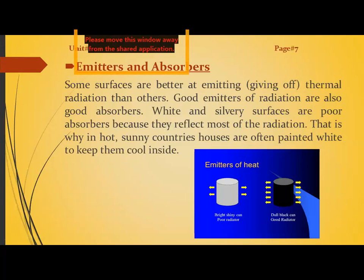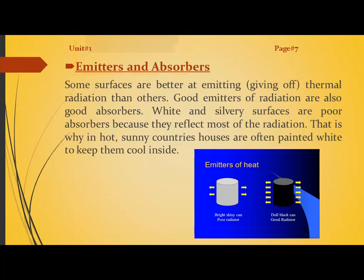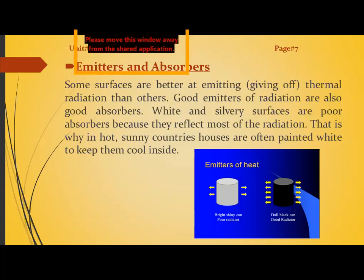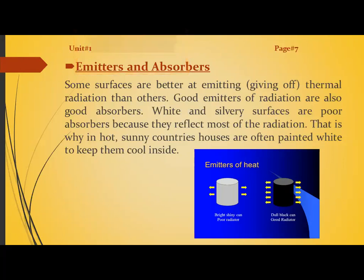Coming to our next topic — emitters and absorbers. Some surfaces are better at emitting radiation than others. Good emitters of radiation are also good absorbers. If something absorbs radiation quickly, it will also emit radiation quickly. White and silvery surfaces are poor absorbers because they reflect most of the radiation.